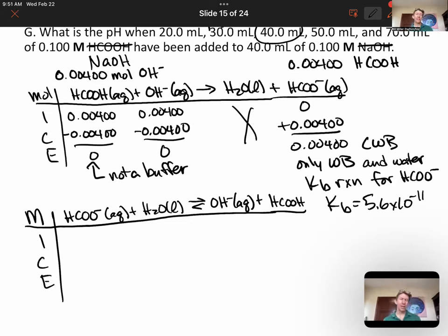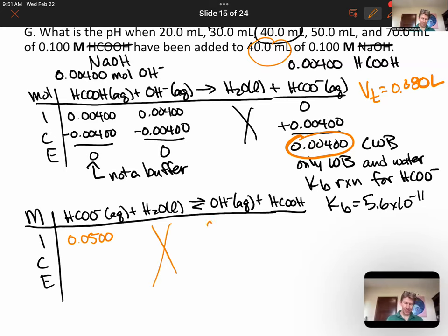This is going to be, it's going to be a base, so it's going to make hydroxide and HCOOH. Kb equals 5.6 times 10 to the minus 11. It's a molarity ICE table, not a mole ICE table. We have moles right here. So we need to convert to molarity. Our total volume is 40 plus 40 or 80, 0.080 liters.